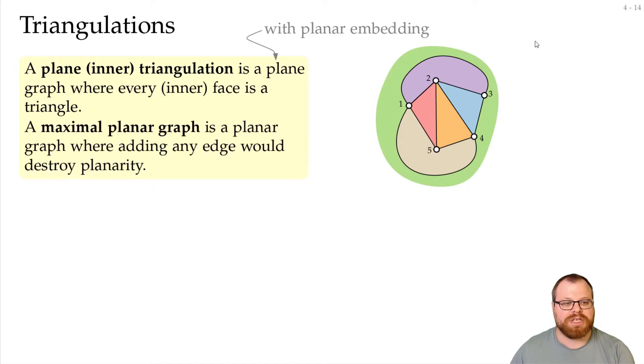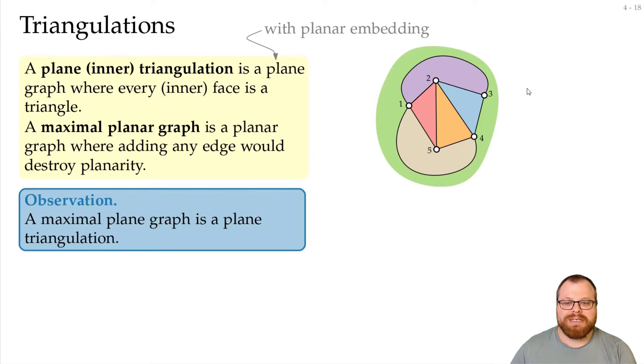Now there's a second subclass, which are the maximal planar graphs. A maximal planar graph is a planar graph where we cannot add any edge without destroying planarity. Let's have a look at this example. Can you find some edge that we can add without destroying planarity? Actually, we cannot. For example, if we add an edge here, then it would create a crossing with this edge. If we route it through the outer face, then we have a crossing with this one. Since every face is a triangle, and every edge we want to add can only be drawn planar if it lies completely inside a face, we cannot add it anywhere, because in a triangle all the vertices are already neighbored.